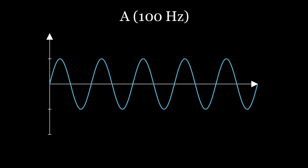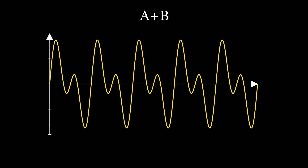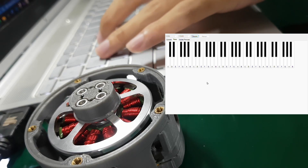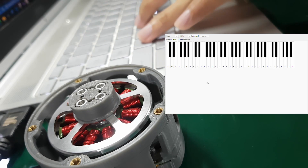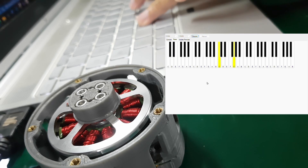For instance, when a 100 Hz sinusoidal wave, signal A, is superimposed with a 200 Hz sinusoidal wave, signal B, the resulting waveform exhibits both frequency components. Due to constraints in the sampling rate, the number of concurrently playable notes is limited. In this implementation, a maximum polyphony of seven notes is enforced.